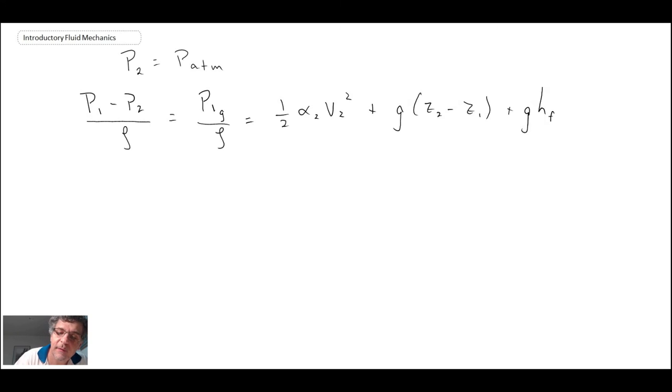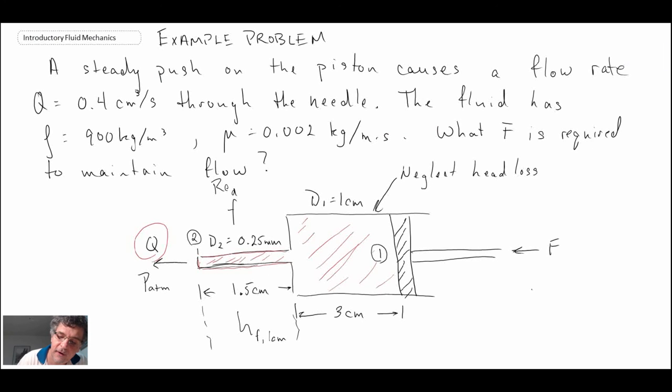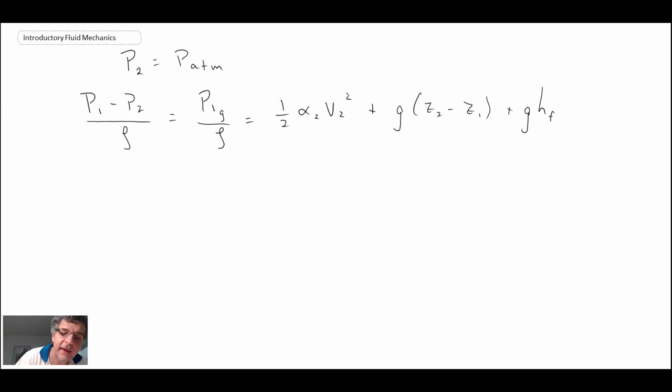We say nothing in the problem statement about the orientation of our syringe, so we're going to assume it is horizontal. Consequently, the elevation z₁ will equal z₂, and with that, this term disappears. When you plug in the values, we've solved for V₂, we know α₂, and we've solved for the head loss. The only unknown is P₁ gauge. We then obtain 184-185 kPa.